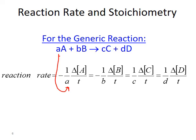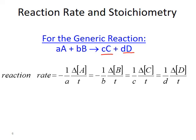Dividing by that coefficient will give us the same value we would get if we were measuring reactant B: the negative of the change in concentration of B over time, divided by its coefficient b. Similarly for products C and D, we calculate the change in concentration over time and divide by their respective coefficients from the balanced chemical equation, giving the same overall reaction rate.